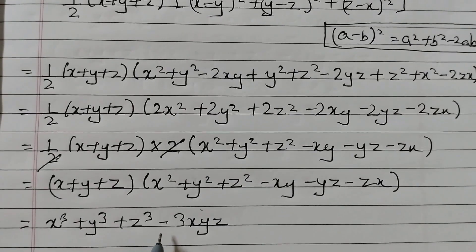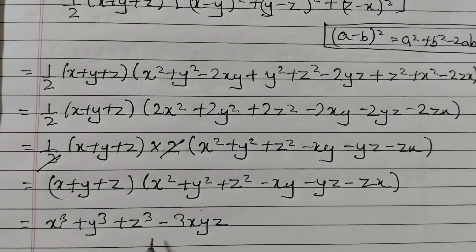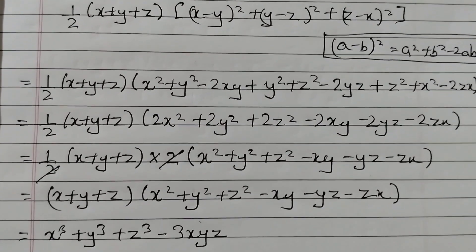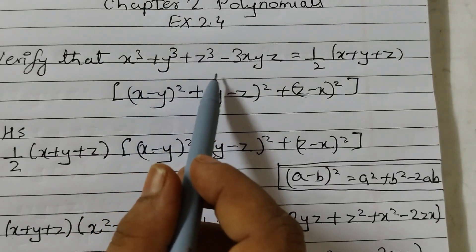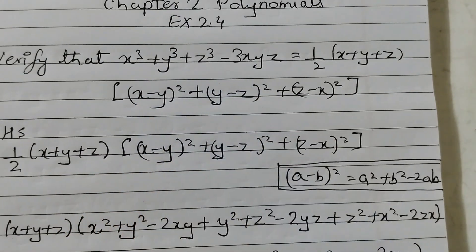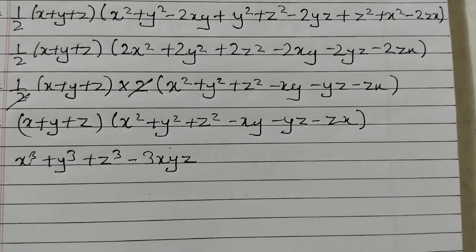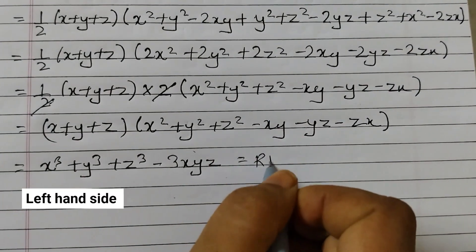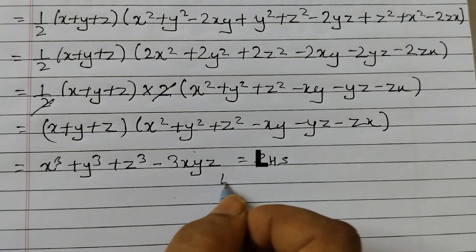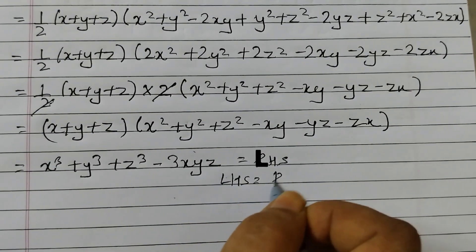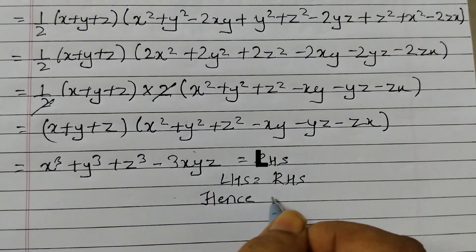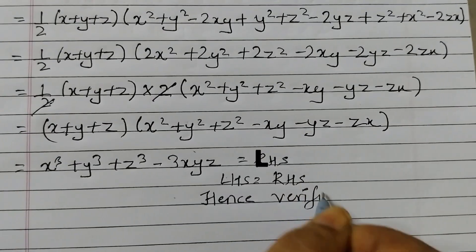Right? This is the identity which is already given to us. And this equals our left hand side — x cubed plus y cubed plus z cubed minus 3xyz. So that equals the right hand side. We can say left hand side is equal to right hand side. Hence we have verified. Hence verified.